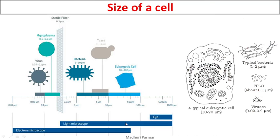Let us see on this scale. This is the textbook diagram — the values mentioned here are important, so remember these. The diagram on the left is for understanding and the diagram on the right is for remembering. A typical eukaryotic cell will be 10 to 20 microns big. The cells like neurons that are 1 meter long are exceptions and are not considered typical.